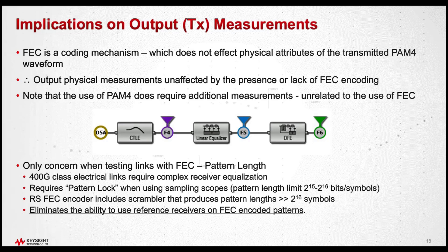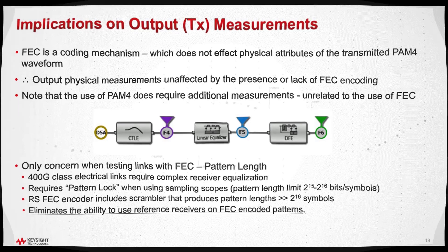Quite often this is going to preclude the use of making measurements on data that is encoded with forward error correction, because the scrambling process alone results in such a long pattern length that we're not going to see that repetition — we're not going to be able to use the pattern lock feature. So that is the limitation for using forward error correction with the TX measurement. In some cases it's not possible when a reference receiver is necessary to make the measurement.